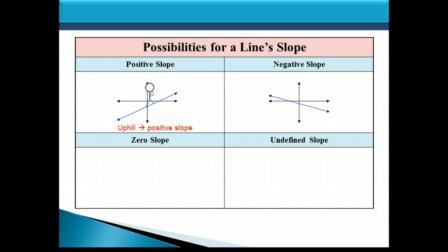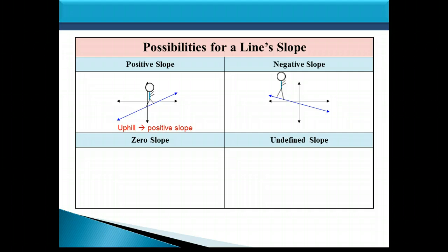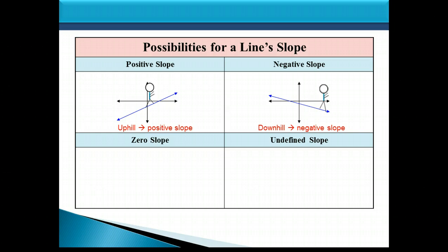Again, think of a little man standing on the left end of the line walking from left to right. This time, notice that he's walking downhill. So if the little man is walking downhill as we move from left to right, that line has a negative slope.